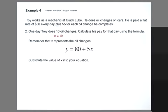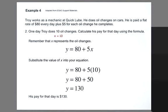So we'll substitute the value of x into our equation to give us y is equal to 80 plus 5 times 10, or y is equal to 80 plus 50, for a grand total of 130. Therefore, his pay for that day would be $130. Good job, Troy.